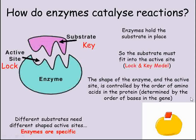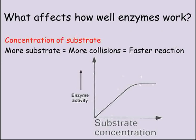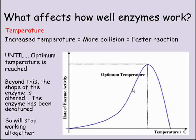There are three main factors that affect how well an enzyme works. The first is the concentration of substrate. The more substrate there is present, the more likely one is to land in the active site of the enzyme, so the reaction happens faster.